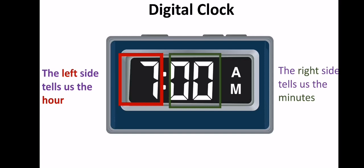The clock that you are now seeing is digital clock. It has two parts, the left side and the right side. Between them there is colon. The left side tells us the hour and the right side tells us the minute. Now it's 7 o'clock.